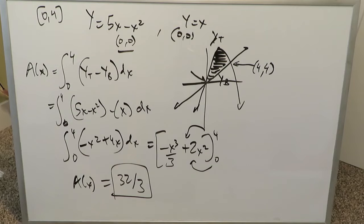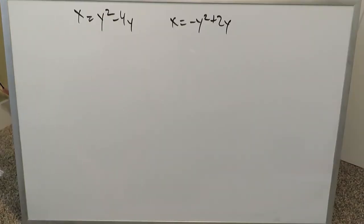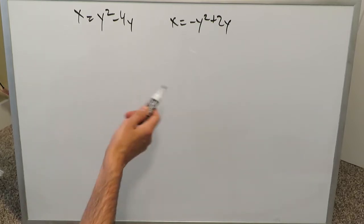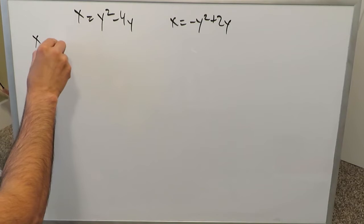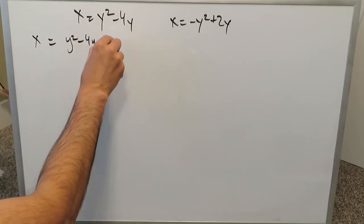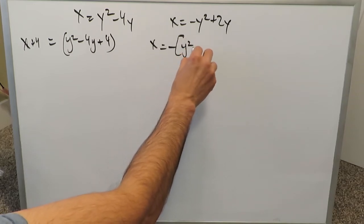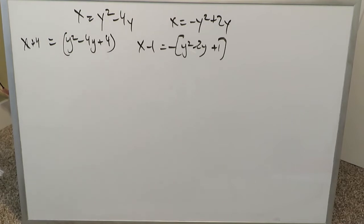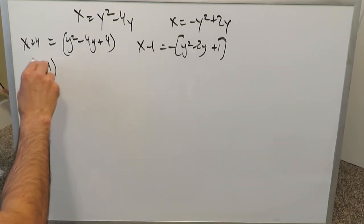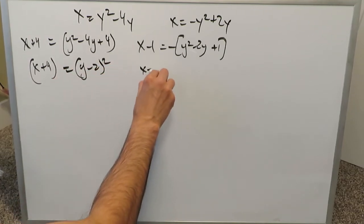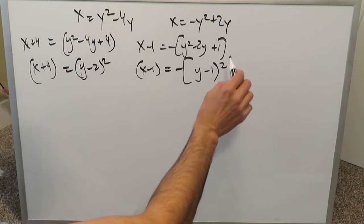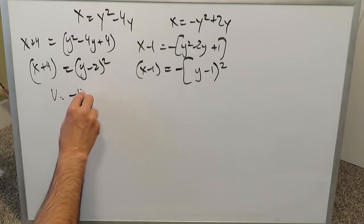This next question provides us with two equations — right and left facing parabolas. Completing the square on the first gives x + 4 = (y − 2)², with vertex (−4, 2). For the second, completing the square gives x − 1 = −(y − 1)², with vertex (1, 1). Setting the two equations equal (both equal to x), we get y² − 4y = −y² + 2y.